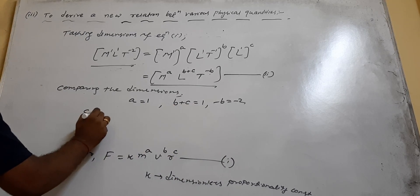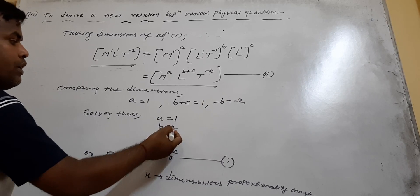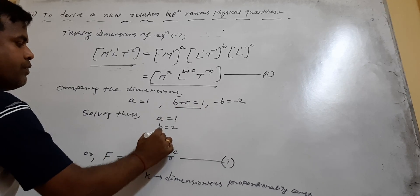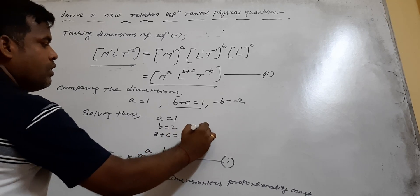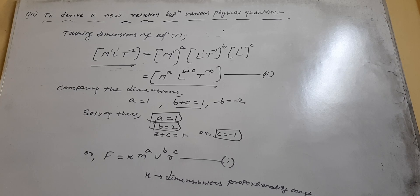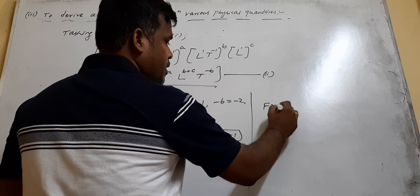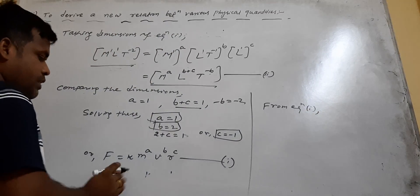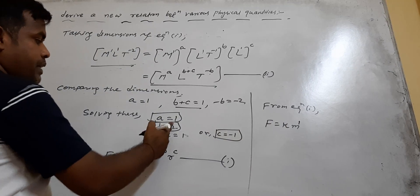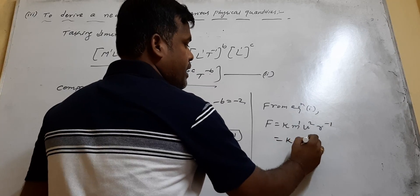Now solving: A equals 1, B equals 2. Putting B = 2 into the equation B plus C equals 1 gives 2 plus C equals 1, so C equals minus 1. These are the values of A, B, and C. Substituting back into equation 1: F equals k·M^1·V^2·R^(−1), that is F equals k·MV²/R.